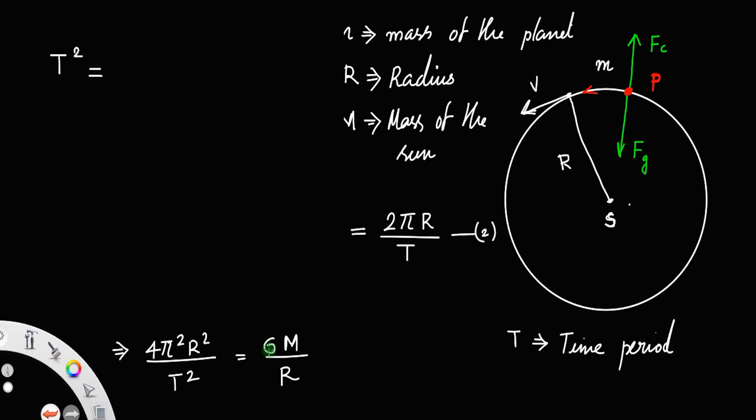T² equals 4π² divided by GM times r², times r, which equals r³. You can rearrange that—you only have to write T² on one side.